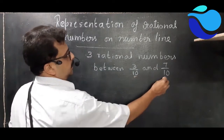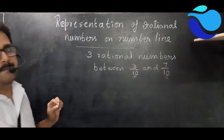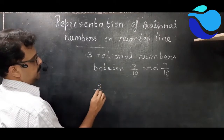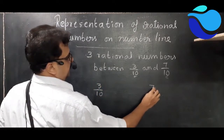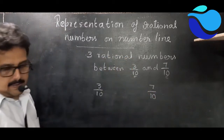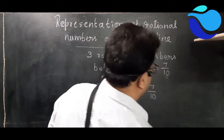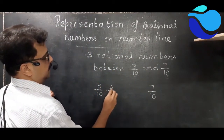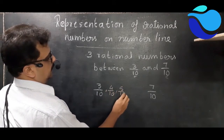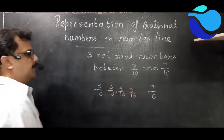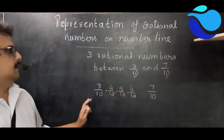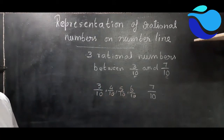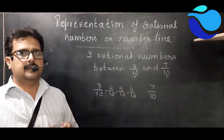Here you can see that both denominators are the same, so you don't have to change them — this will be easy. Between three by ten and seven by ten, you have to find three rational numbers. After three by ten you can write four by ten, five by ten, and six by ten. So we have written three rational numbers between three by ten and seven by ten.